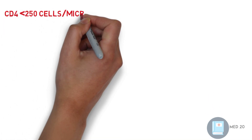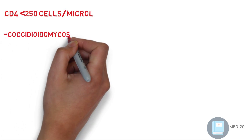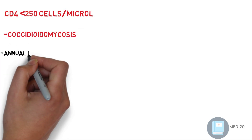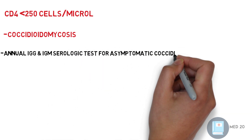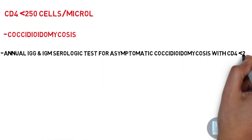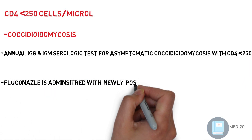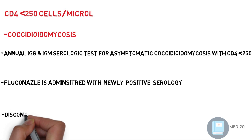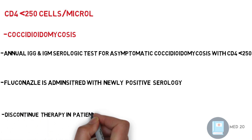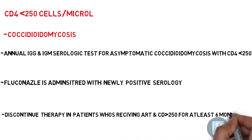CD4 less than 250 — coccidioidomycosis: Annual IgG and IgM serological testing is recommended for asymptomatic patients with CD4 less than 250. Fluconazole is administered with newly positive serology. Discontinue therapy in patients receiving ART with CD4 greater than 250 for at least six months.